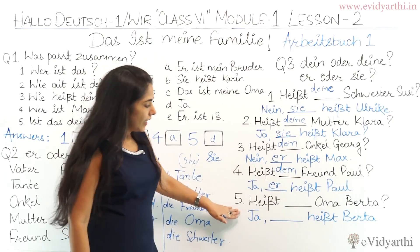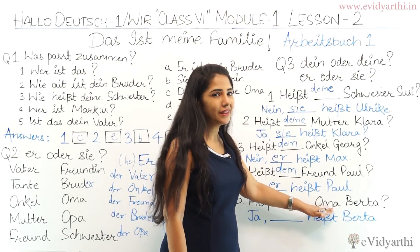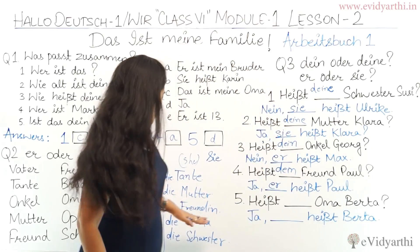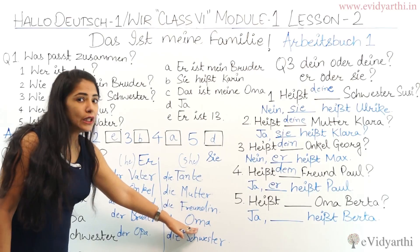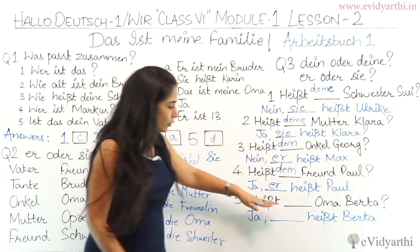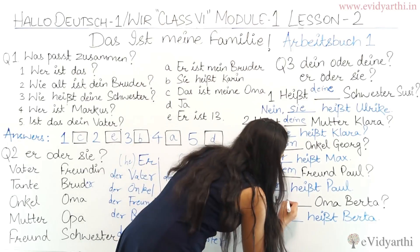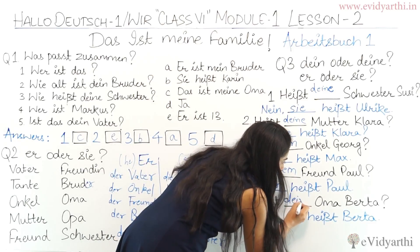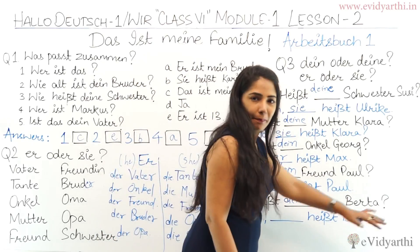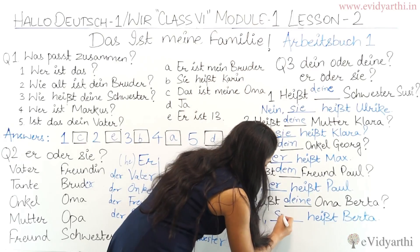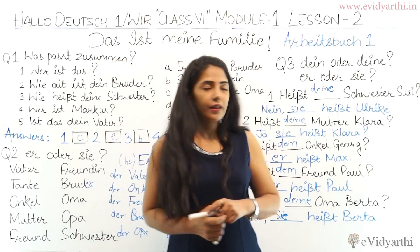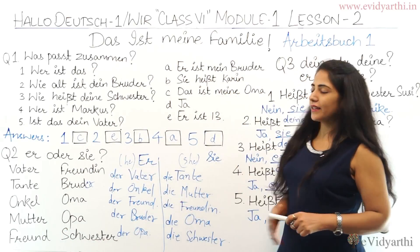Next: 'Wie heißt deine/dein Oma?' — 'Oma' is feminine, 'die Oma,' and you would use 'sie' for her. So 'deine Oma.' I hope these three exercises are clear to you.